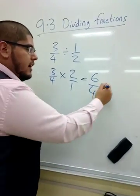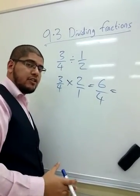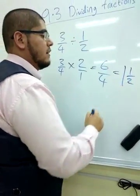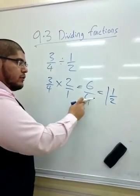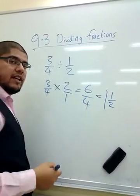And simplify, we should always simplify. We don't like improper fractions, so make it into a mixed number, which is 1 and a half. 4 goes into 6 one time, and then there's 2 left over, 2 over 4 is a half.